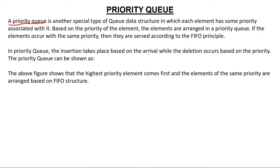If two or three elements have the same Priority, they are served according to FIFO order — that is, based on what time they arrived. So elements with the same priority are arranged based on who came first. In a Priority Queue, insertion takes place based on arrival while deletion occurs based on Priority.